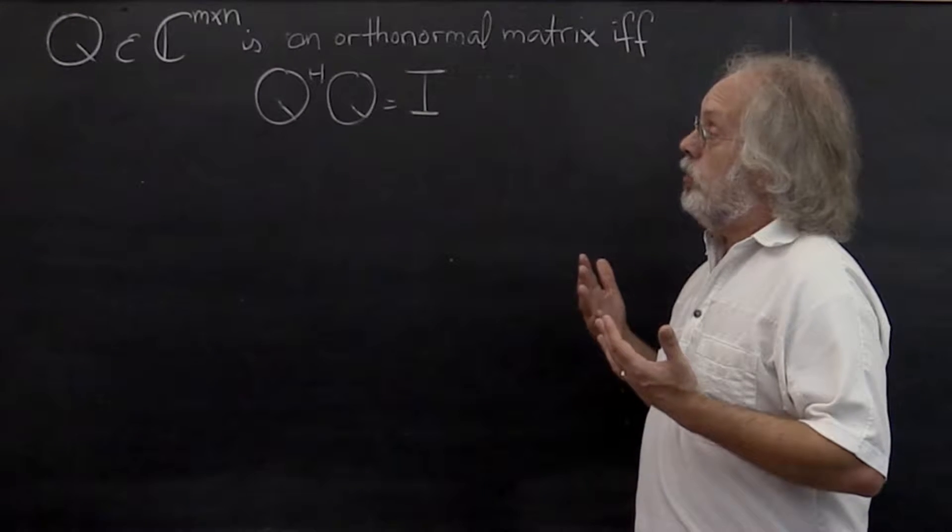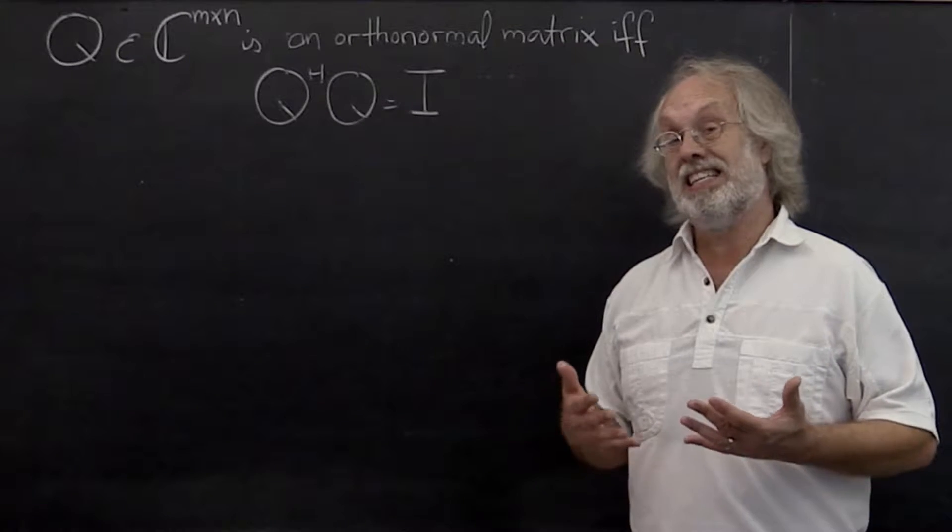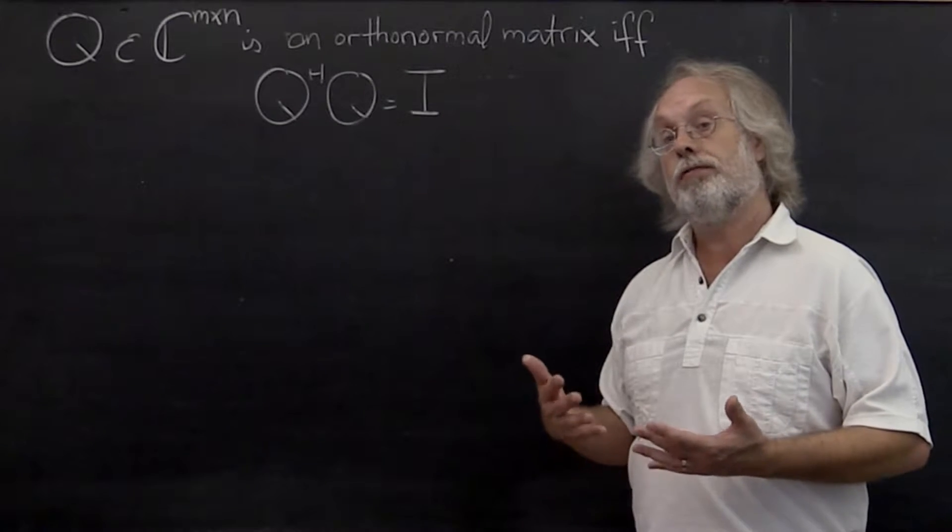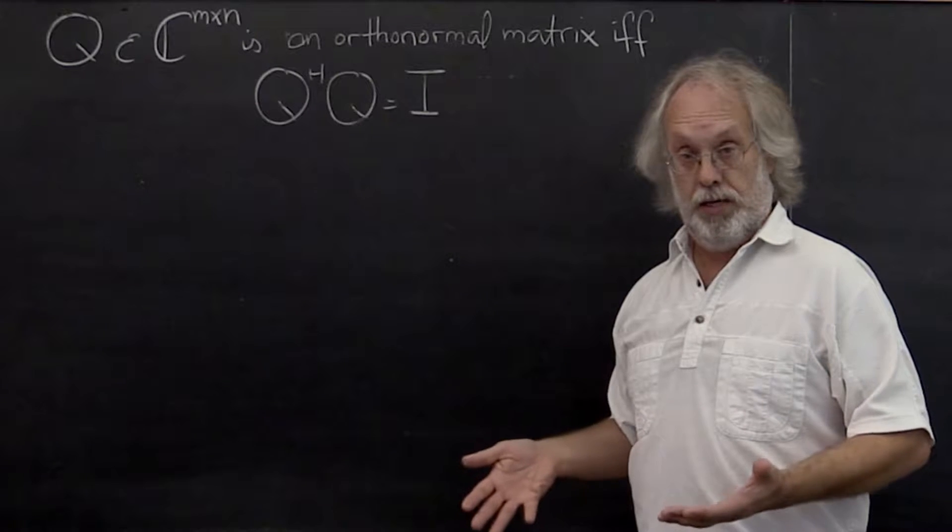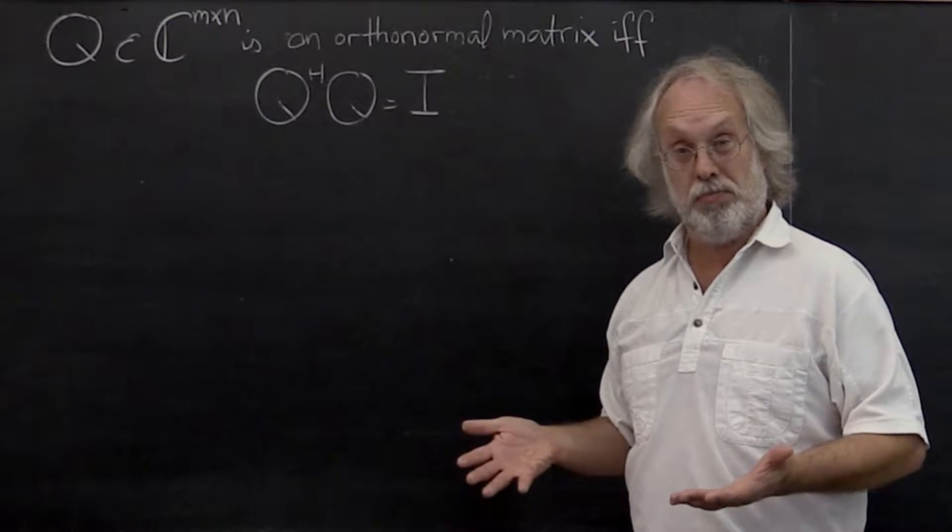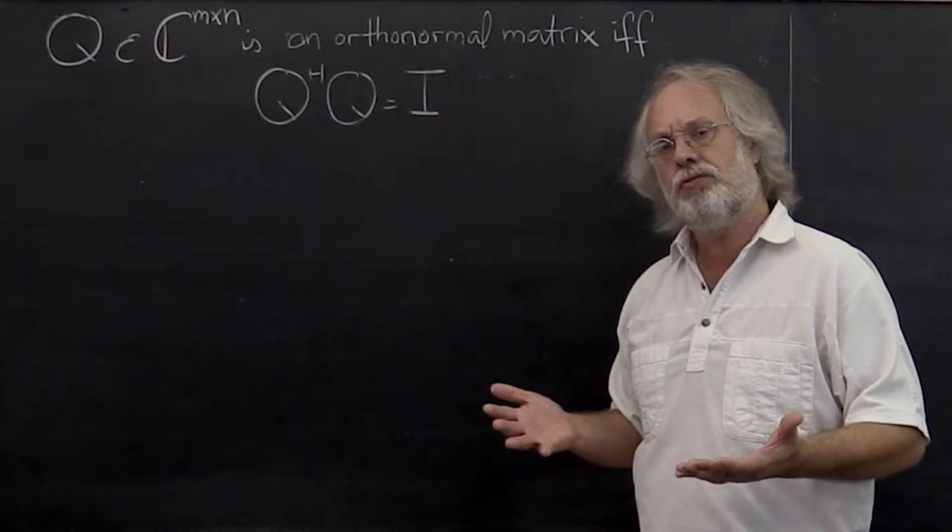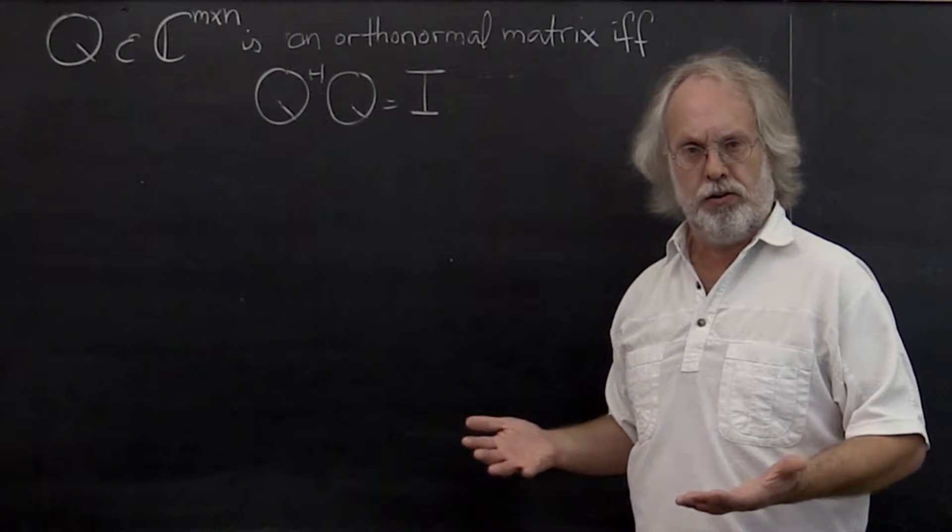And if the unitary matrix is real valued, then often the matrix is called an orthogonal matrix, which of course can lead to a lot of confusion. Because you would think an orthogonal matrix, that just means that its columns are orthogonal.